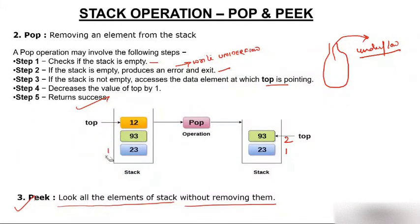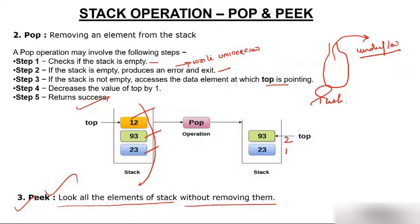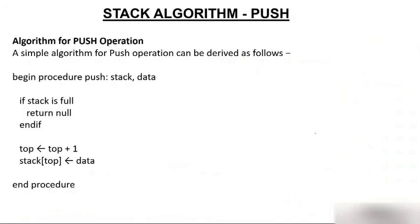The third operation of stack is peek. Peek means to look at all the elements of the stack without removing them. For example, if you want to see the elements — the top element is 12, then 93, then 23 — you can view all of them without removing any. This is called the peek operation. So there are three operations: push, pop, and peek, where peek is used to traverse the stack.